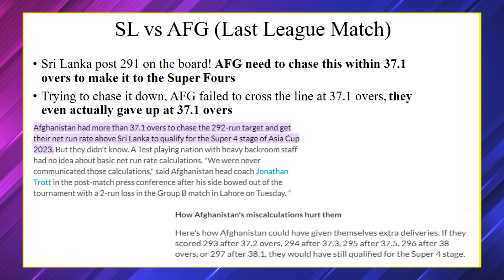Afghanistan gave up right at 37.1 overs — they did not score. But looking at all the back-end calculations, Afghanistan actually still had a chance until 37.4 or even 38.1 overs. The Afghanistan coach admitted that this information was never communicated to the team, and as a result they missed out on qualifying — a major heartbreak for Afghanistan fans.